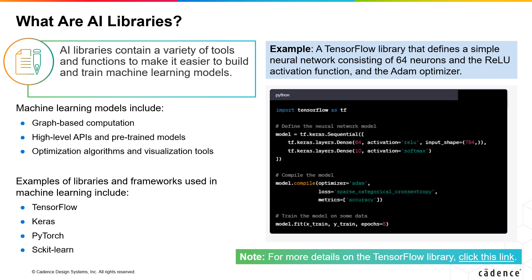AI libraries contain tools and functions that make it easier to build and train machine learning models. TensorFlow is an open-source library developed by Google for building and training machine learning models. It's widely used in deep learning applications, such as image recognition, natural language processing, and speech recognition.